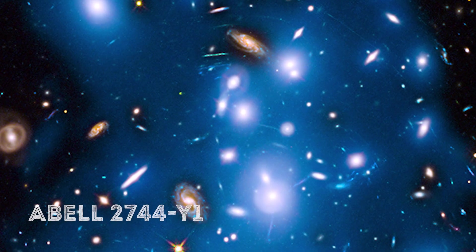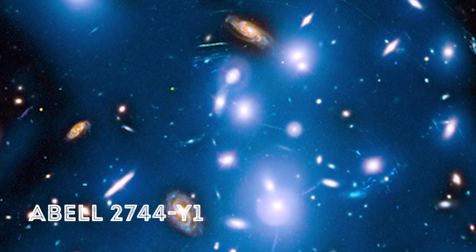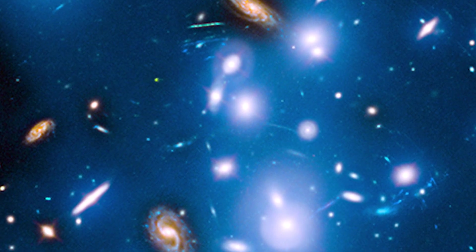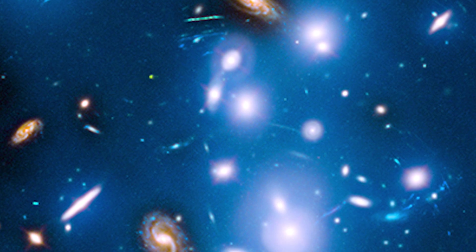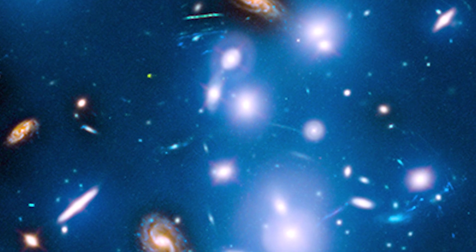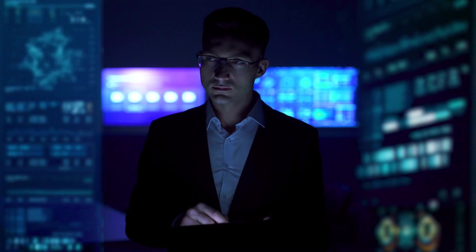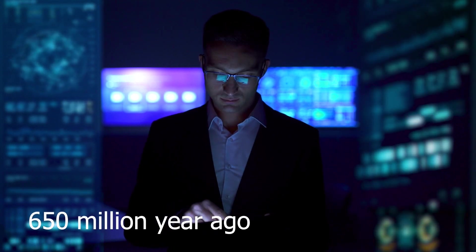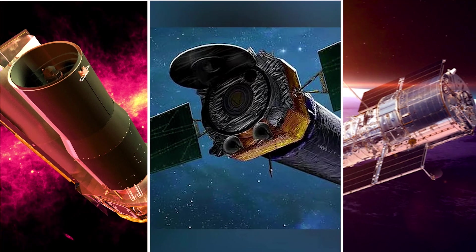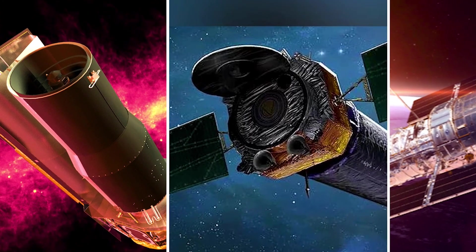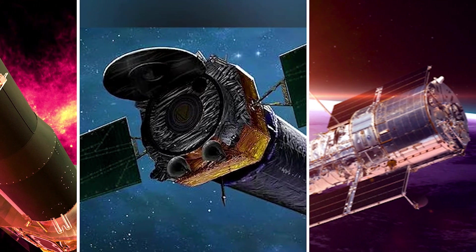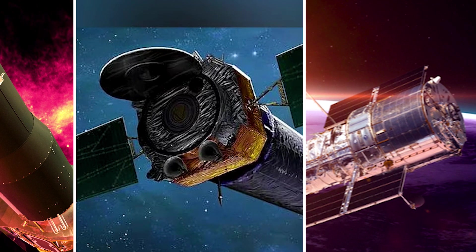Enter Abel 2744 Y1, a cosmic marvel perched at the furthest reaches of the cosmos. Despite its 13 billion year journey to greet us, this celestial entity grants us a glimpse into its youthful past, a snapshot from 650 million years ago. The cosmic detectives, Spitzer, Hubble, and the James Webb Space Telescopes unite their powers to unravel its mysteries.